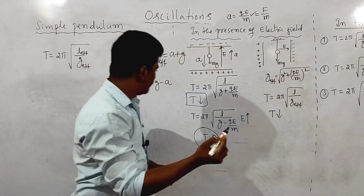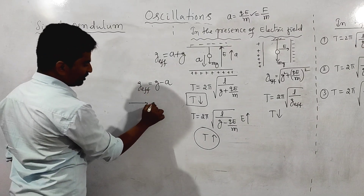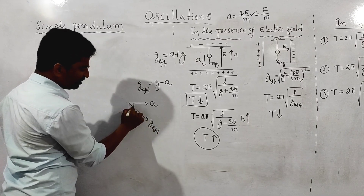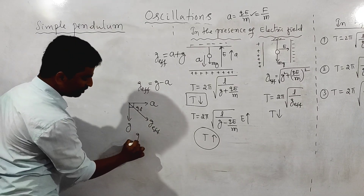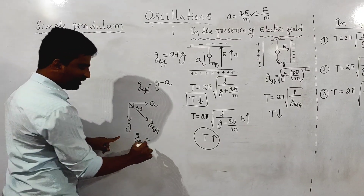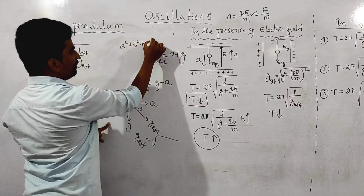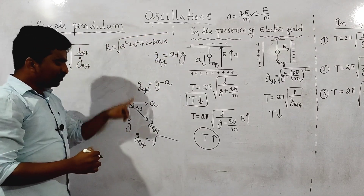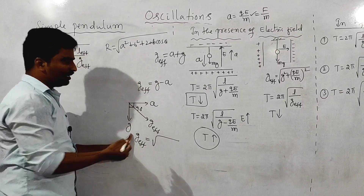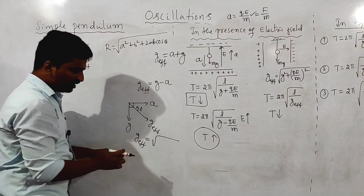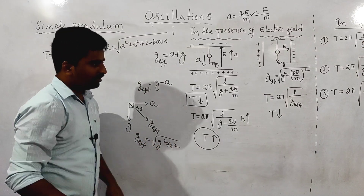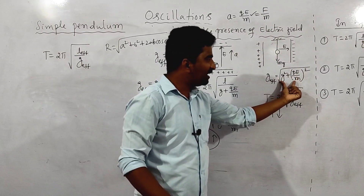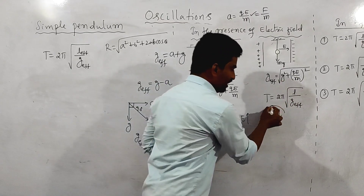When the electric field is perpendicular, the acceleration is also perpendicular (90 degrees). G_eff is the resultant: √(G² + A²) using the vector resultant formula (a² + b² + 2ab·cosθ, with θ = 90°, cos90° = 0). So G_eff = √(G² + A²) = √(G² + (QE/M)²). Since acceleration increases, the time period decreases.